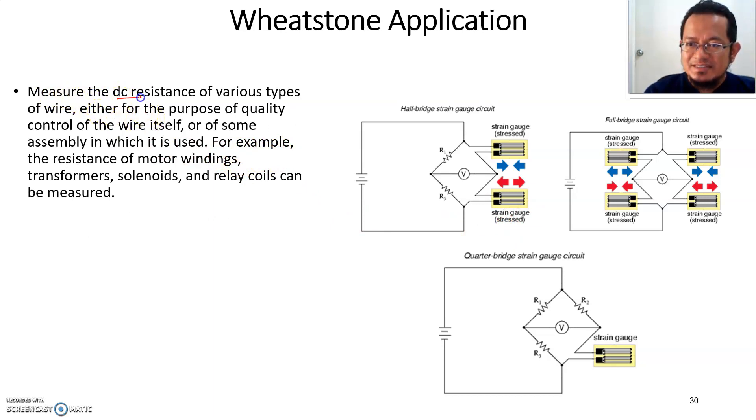For the purpose of quality control of the wire itself or some assembly in which it's used. For example, the resistance of motor windings - in electrical motors there's a lot of windings or wires, so one of the important parameters for engineers to determine is what is the resistance of the motor windings. Transformers also have windings, and solenoids and relay coils can be measured using Wheatstone bridge.